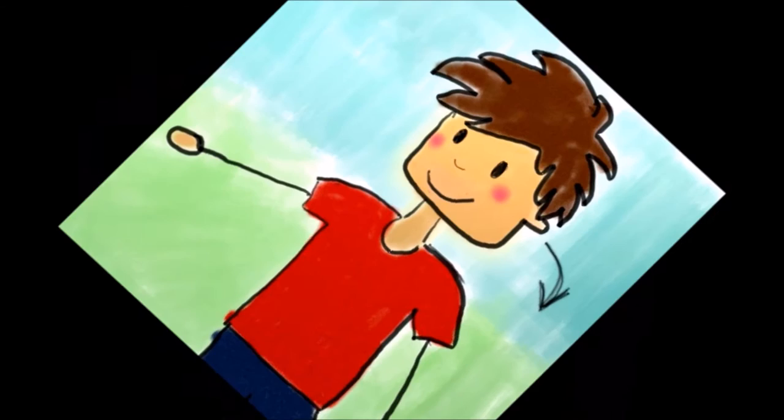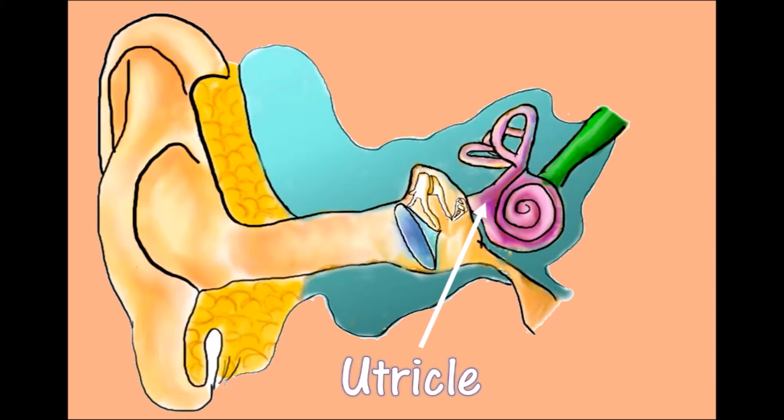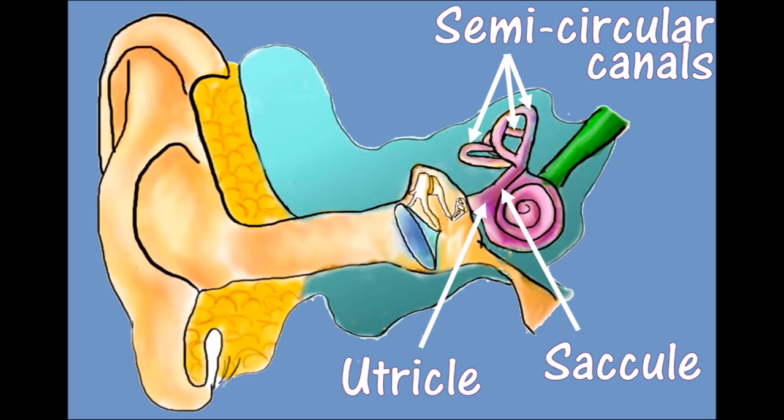Normally, the body is able to tell how your head is orientated using signals from the vestibular system in your ear. This system is made up of five fluid-filled organs: utricle, saccule, and the three semi-circular canals.